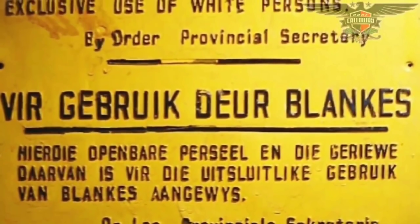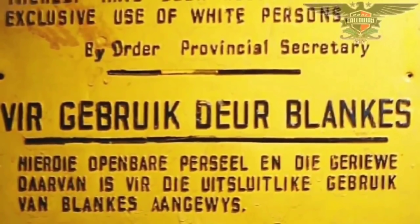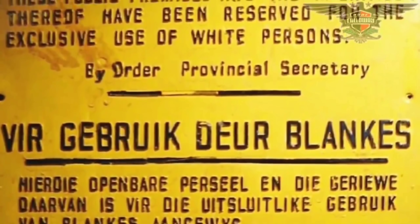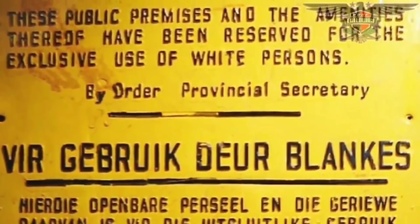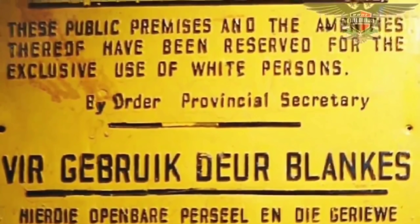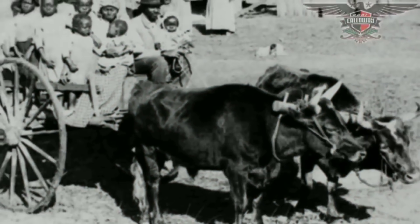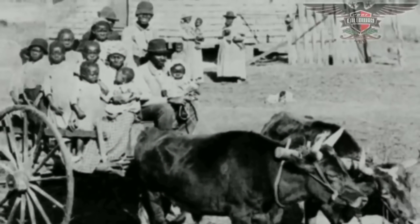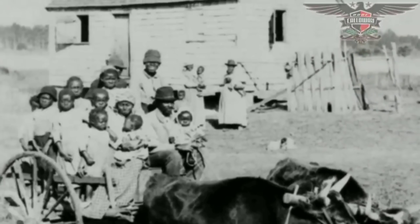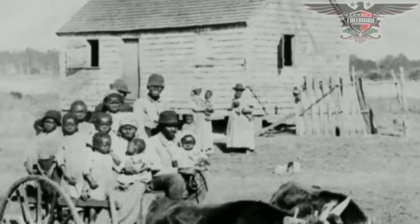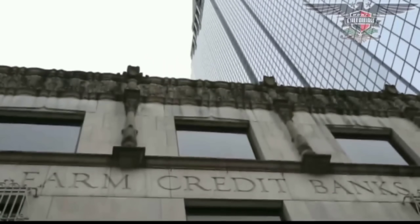It was said that whoever controls the trade controls the land, and with the creation of currency, the use of shares, stocks and bonds, along with the implementation of economics and exchange, the Negro farmers would soon lose control of the trade here in the U.S. And subsequently, they also lost control over their lands with the help of the banks.